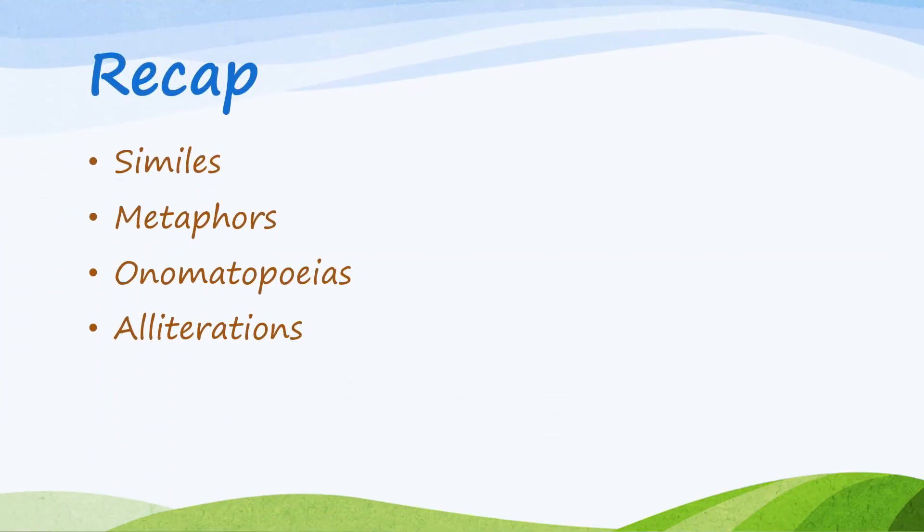Let's recap. Descriptive writing can be improved by using similes, metaphors, onomatopoeias, and alliteration. It helps with great word choice and also paints the picture in a reader's mind. Happy writing. Thanks for joining.